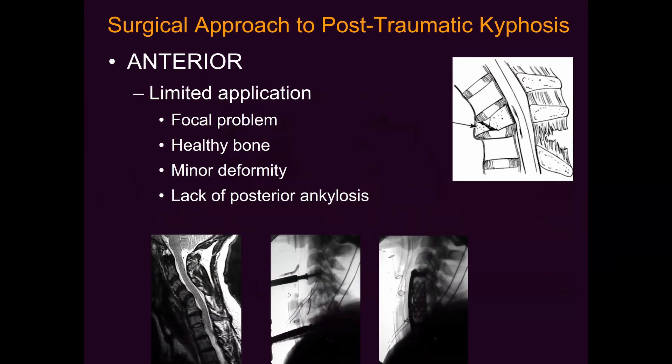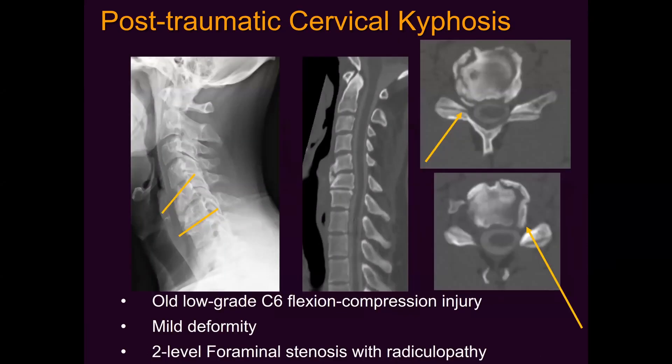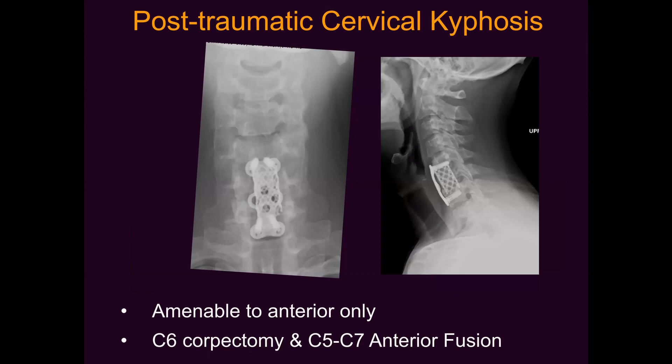Anterior-alone procedures have a limited role — typically for relatively mild kyphotic-only deformities. They are difficult to use for translational or rotational malalignment, and are best suited for patients with good bone to reduce likelihood of failure. Here's an example of a patient with an old, relatively mild flexion compression injury treated non-operatively. The deformity is fairly mild; he's being treated not only for deformity but also for foraminal stenosis. A corpectomy with anterior interbody arthrodesis was a reasonable option to address nerve compression and correct the deformity.